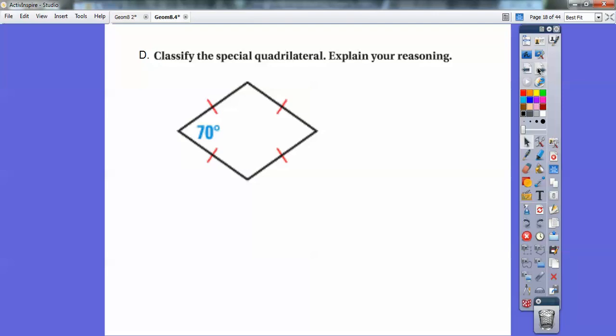Okay, so classify this special quadrilateral and explain your reasoning. Alright, this one is definitely a rhombus. It's not anything else because of that 70 degree angle. That 70 degree angle, if it was a 90 it would be a square. But it's not a 90 so it's a rhombus. All the sides are congruent.